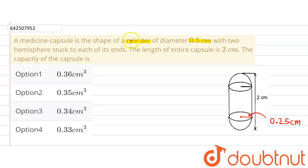Then there are two hemispheres stuck to each of its ends. So there are two hemispheres also. Now we are given the length of the entire capsule. The entire capsule has a length of 2 cm. And we are asked to find out the capacity or the volume of the capsule.